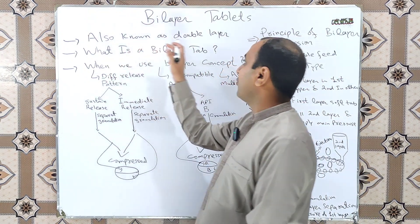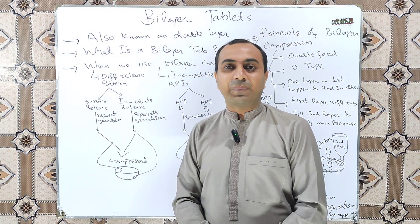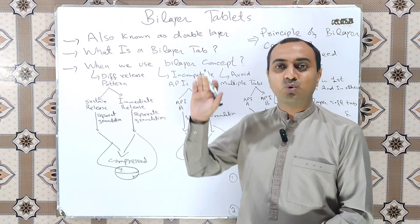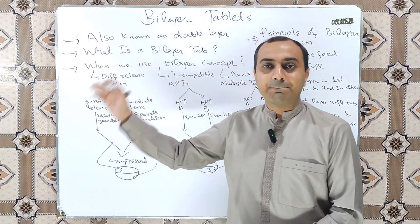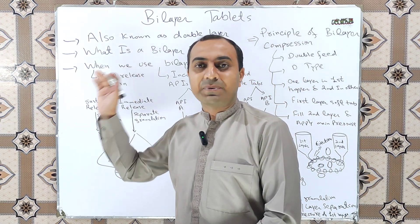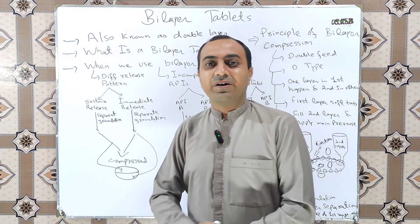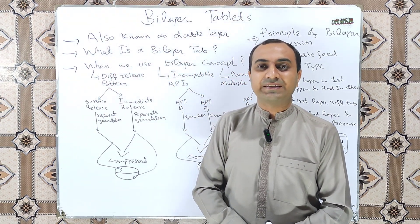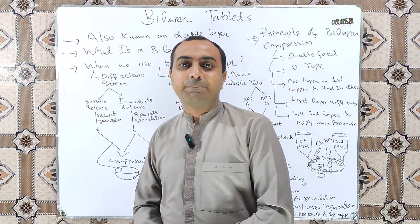Bilayer tablet is also known as double layer tablet. It is the type of tablet where we compress two active pharmaceutical ingredients in two different layers and then combine these two layers by applying the main pressure to compress a single tablet. In simple words, a bilayer tablet contains two active pharmaceutical ingredients in two different layers, and these two layers are joined together by pressure.